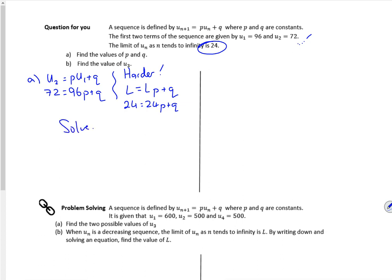So if I solve them simultaneously, I get p is 2 thirds and q is 8. So for part B, u3 will be 2 thirds of u2 plus 8. So u3 is 2.